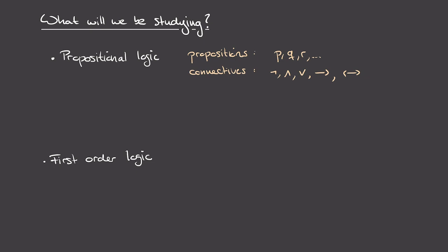An example of a formula in propositional logic: r and not i implies c, where r could stand for rain, i for indoors, and c for clouds. This statement would be interpreted as: if it's raining and we're not indoors, then there must be clouds. That's a simple example of the type of statement we can express in propositional logic.